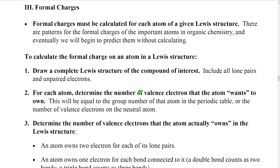In the next part of our lecture we're going to discuss some modifications that we have to make to Lewis structures in order to make them work a little bit better. The first modification we're going to discuss is formal charges. Formal charges show where atoms might have an imbalance between the number of electrons they have in their valence shell and core compared to the number of positive charges they have in their nucleus. This gives us an idea of where electron density might be high or low in a molecule, which we're going to use later to predict reactivity.